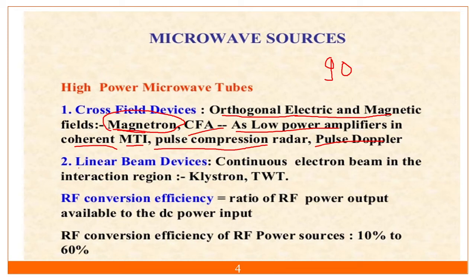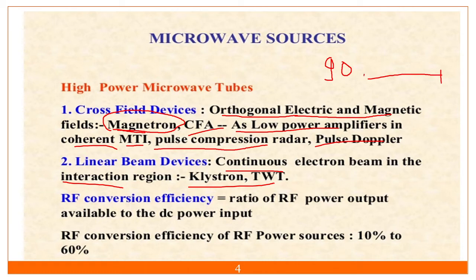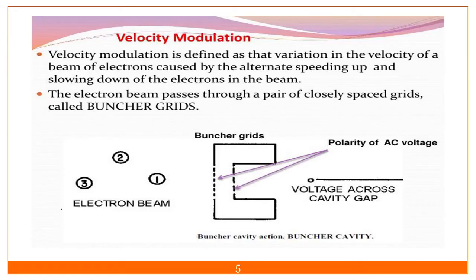In the linear beam, a continuous electron beam is in the interaction region — that means klystron and TWT. The continuous electron beam is carried from the cathode to the anode. There is also the RF convergence, which we will discuss later on.